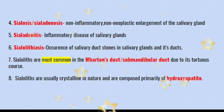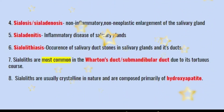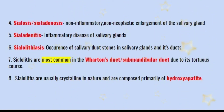Point 7: sialoliths are most common in Wharton's duct, or the submandibular duct, due to its tortuous course. Point 8: sialoliths are usually crystalline in nature and are composed primarily of hydroxyapatite.